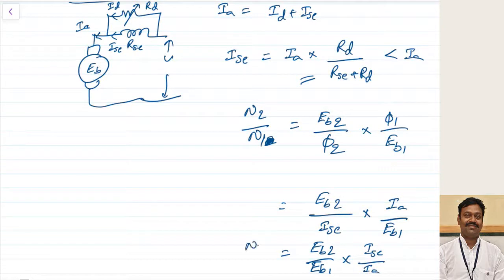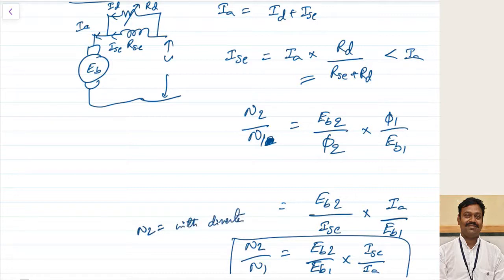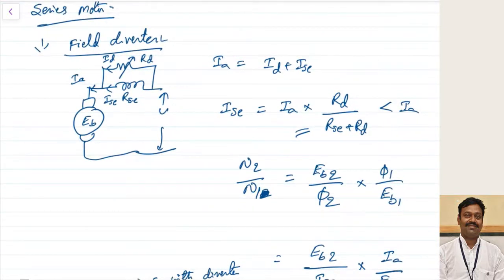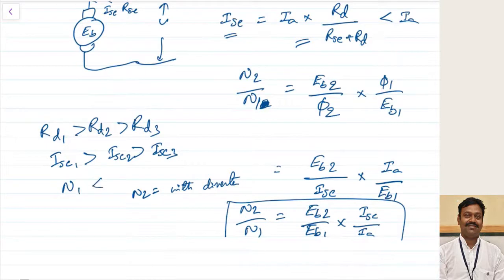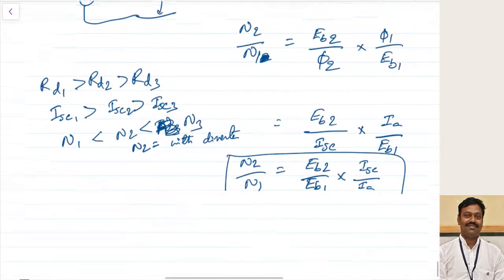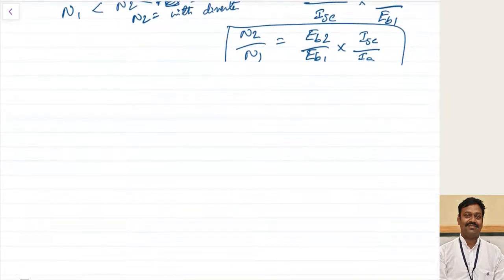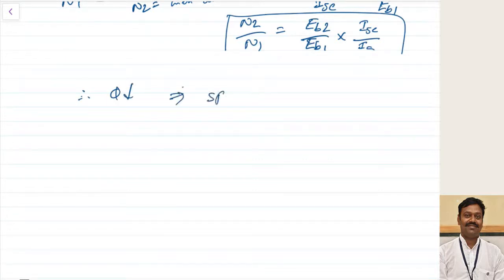As the value of Rd is increased, Isc will increase. If Rd1 > Rd2 > Rd3, then Isc1 > Isc2 > Isc3. Since speed is inversely proportional to flux and flux depends on current, N1 < N2 < N3. So here also, as flux is decreased, only speeds above normal are possible.